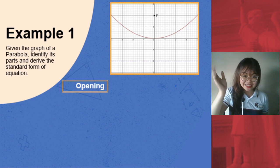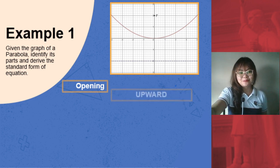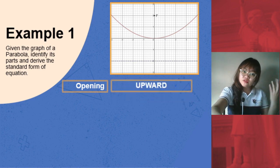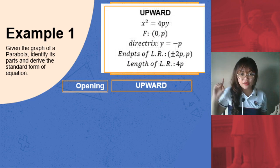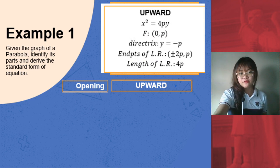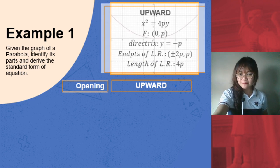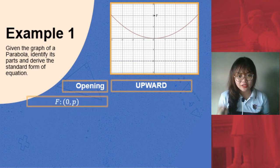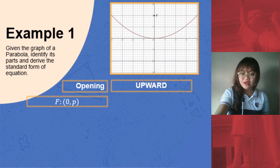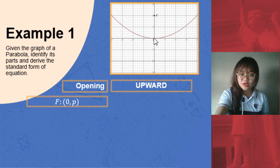Now let's remember from our guide, when it's opening upward, these are the parts that we have to consider and these are the formulas that we would use. Let's look at the focus. What would be the coordinates of our focus from the graph? Counting from our vertex here at the origin, we have one, two units.